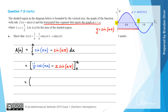Substituting in the upper terminal a, we get −(1/π)cos(πa) minus a·sin(aπ). Then we subtract the anti-derivative with the lower value 0 substituted in: −(1/π)cos(0) minus 0·sin(aπ). Since 0 times anything is 0, that last term disappears.